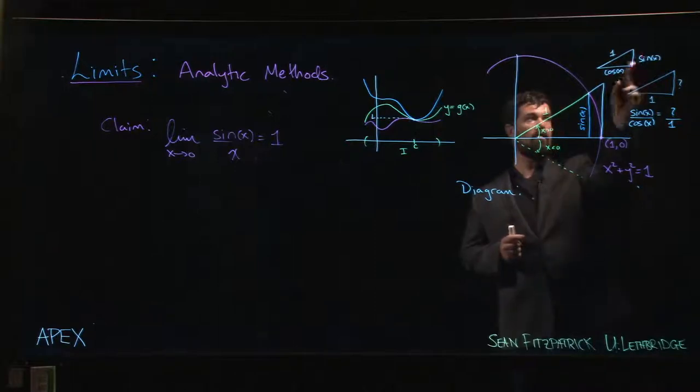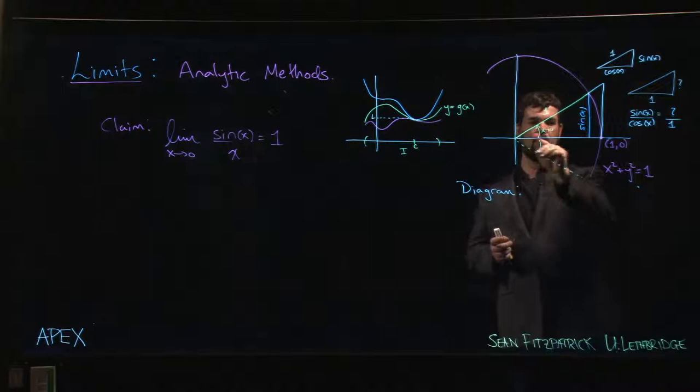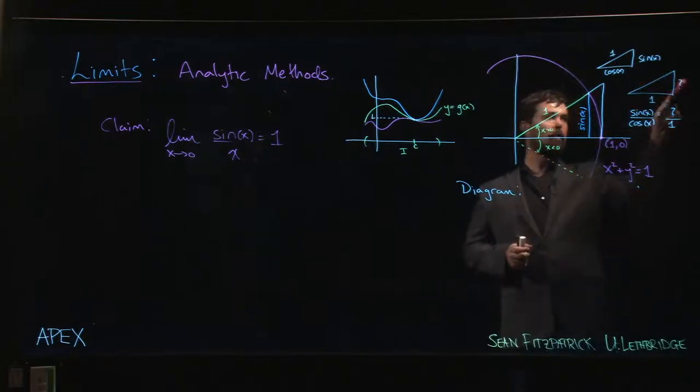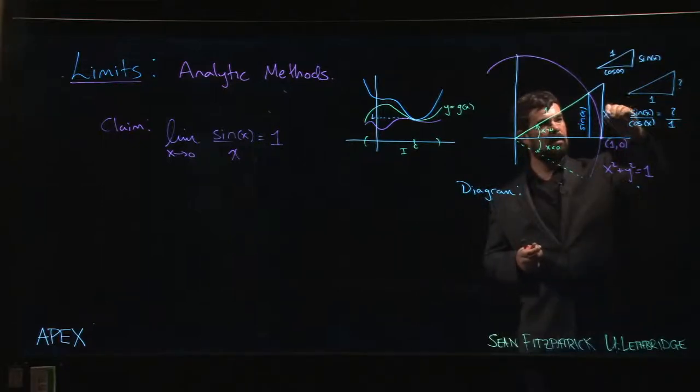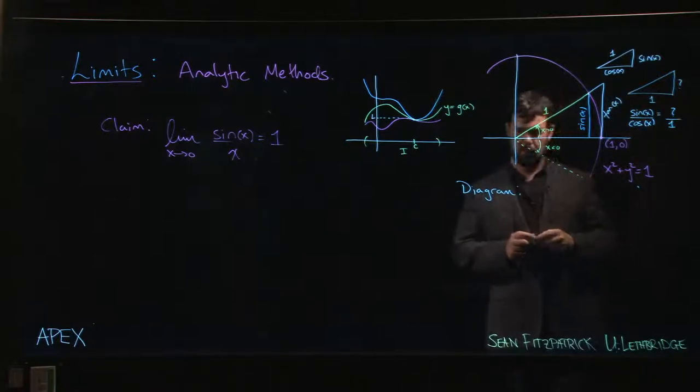Now we make a similar triangles argument. This triangle is similar to the bigger one here. These are the side lengths for that triangle: 1, sin(x), cos(x). This one has bottom length 1 because that's the radius of the circle. We're interested in the length of this side, but from similar triangles, the ratio of these sides must equal the ratio of those sides, so we know exactly what goes in here: sin(x) over cos(x), that's tan(x). So this is tan(x).